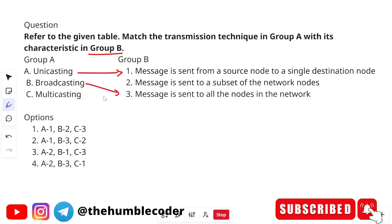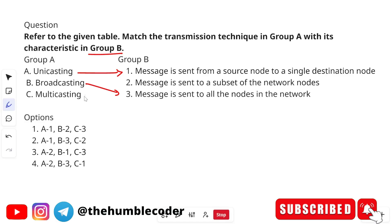Multicasting maps to 'a subset of network nodes' (C→2), because multicasting is one-to-many communication sent only to a selected group of nodes, not all. The final match pattern is: A→1, B→3, C→2. The correct answer is option 2.